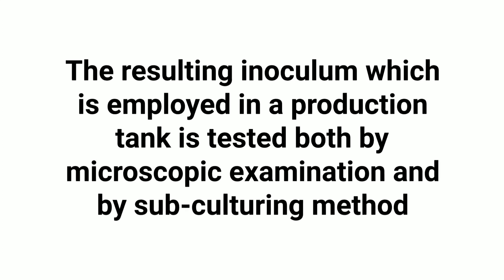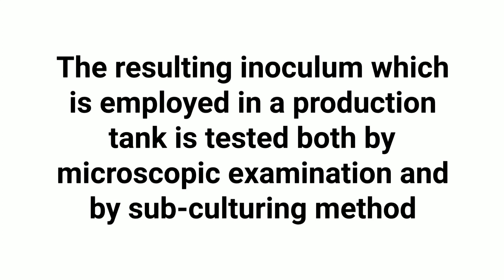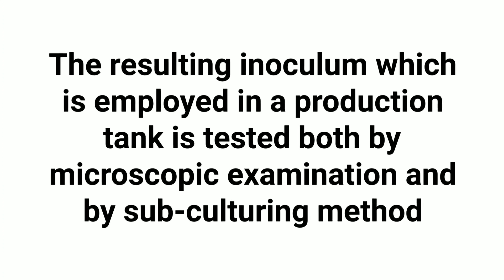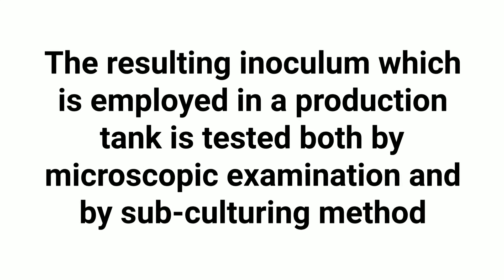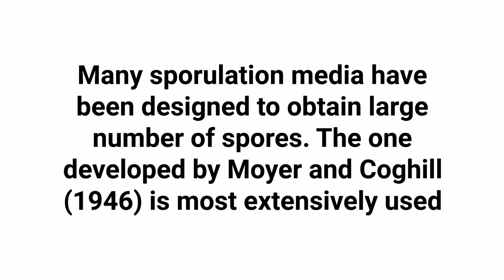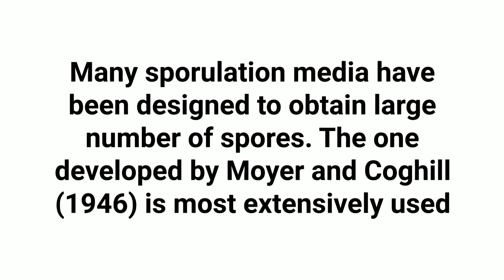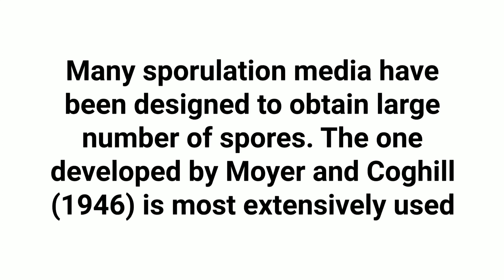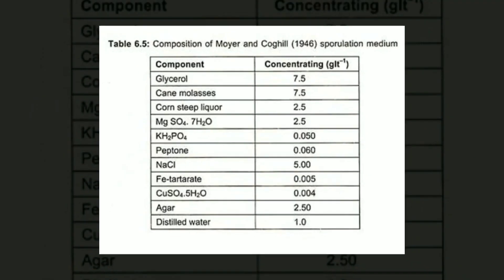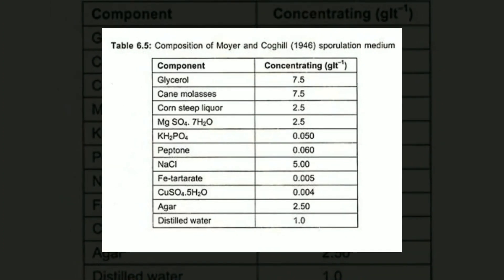The resulting inoculum used in a production tank is tested both by microscopic examination and by subculturing method. Many sporulation media have been designed to obtain large numbers of spores; the one developed by Moir and Coquille in 1946 is the most extensively used. Moir and Coquille sporulation medium contains: glycerol, cane molasses, corn steep liquor, magnesium sulfate, potassium dihydrogen phosphate, peptone, sodium chloride, iron tartrate, copper sulfate, agar, and distilled water — concentrations given in grams per liter.